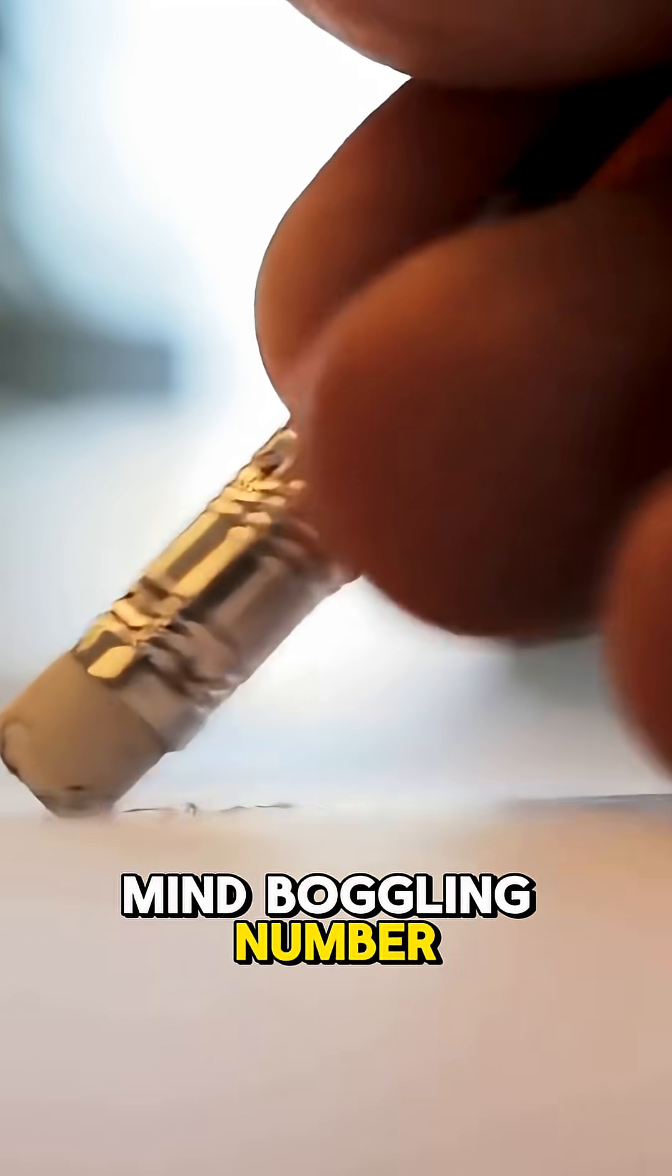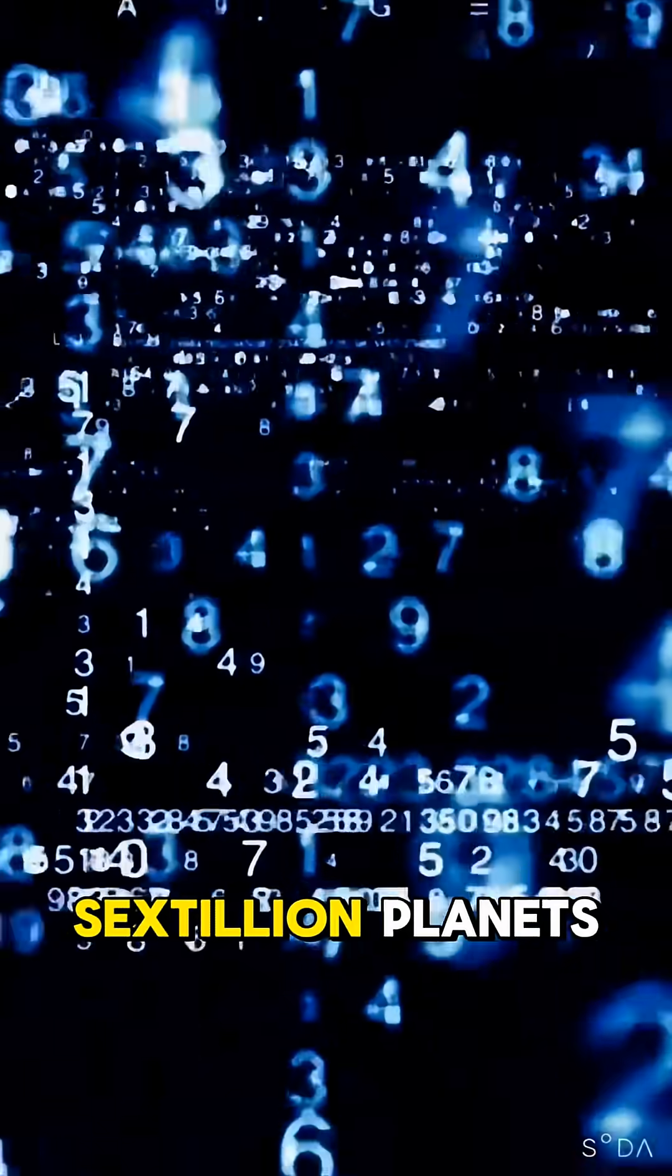you get a mind-boggling number, around 300 sextillion planets. That's 300 followed by 21 zeros.